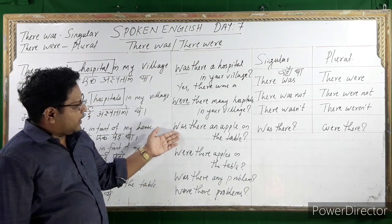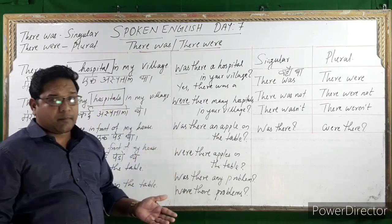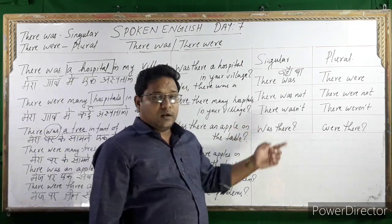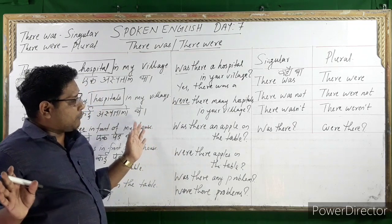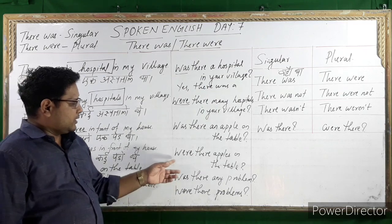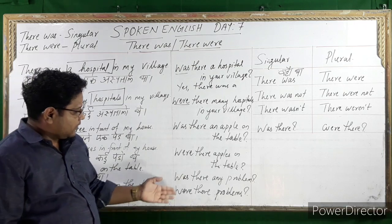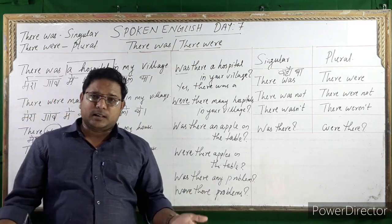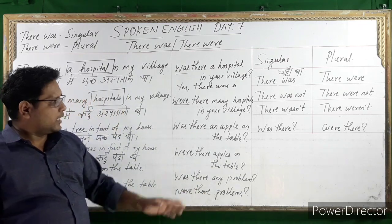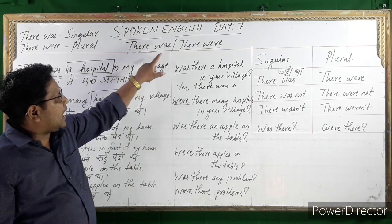'Was there an apple on the table?' Yes, there was an apple on the table. No, there wasn't. There wasn't an apple on the table. 'Were there apples on the table?' Yes, there were many apples on the table — three apples on the table. 'Was there any problem?' 'Were there problems?' In this phase we use 'there was' and 'there were.'